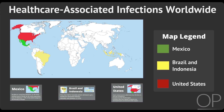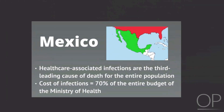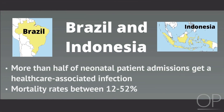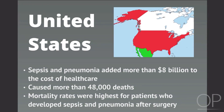Health care associated infections are a major cause of death and disability worldwide and cost billions of dollars. For example, in Mexico, health care associated infections are the third leading cause of death for the entire population, and the cost of these infections equals 70% of the entire budget of the Ministry of Health. In Brazil and Indonesia, more than half of neonatal patient admissions get a health care associated infection with mortality rates between 12 to 52%. In the United States, a study on clinical and economic outcomes showed that sepsis and pneumonia added more than $8 billion to the cost of health care and caused more than 48,000 deaths. Mortality rates were highest for patients who developed sepsis and pneumonia after surgery.